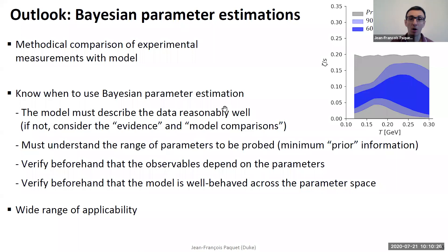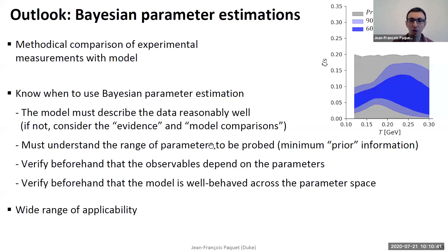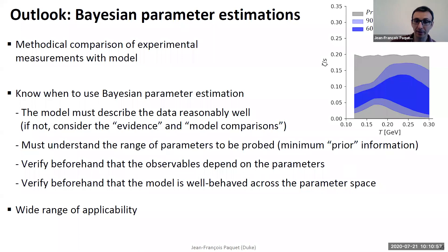You want to have a good understanding of the range of parameters that you want to probe, so you need minimum information about your prior — for example, the minimum and maximum value of the neutron width you want to probe. You also want to verify beforehand that your observable actually depends on the parameters you want to study, just to make sure you're not going to get a trivial flat distribution from your Bayesian analysis.